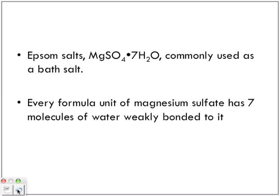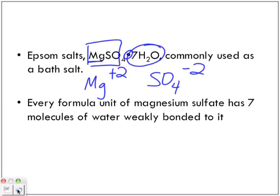Epsom salt, MgSO4·7H2O, commonly used as a bath salt. For every formula unit of magnesium sulfate, we have seven molecules of water that are weakly bonded to it. This dot doesn't mean multiplication like we've seen in math classes. It just means that we have a total of seven molecules of water weakly bonded to this formula unit.